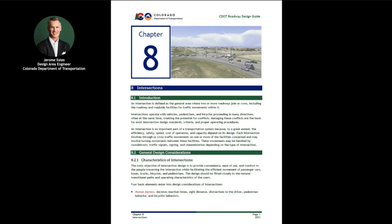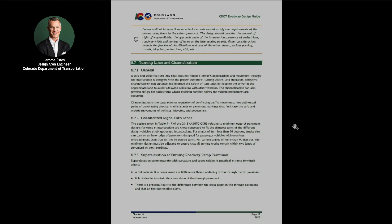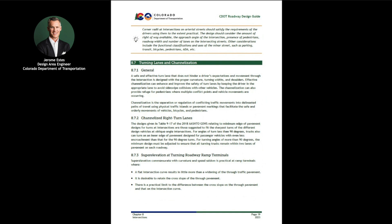Chapter 8 offers important design guidance on intersections that transportation features often considered to be the most dangerous areas along a facility. An intersection is defined as the general area where two or more roadways join or cross, including the roadway and roadside facilities for traffic movements within it. Intersections operate with vehicles, pedestrians, and bicycles proceeding in many directions, often at the same time, creating the potential for conflicts. Managing these conflicts are the basis for most intersection design standards, criteria, and proper operating procedures.